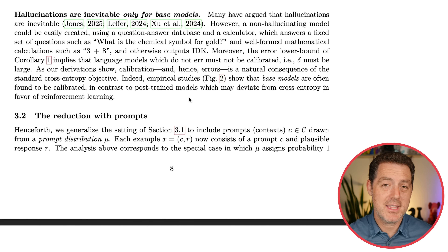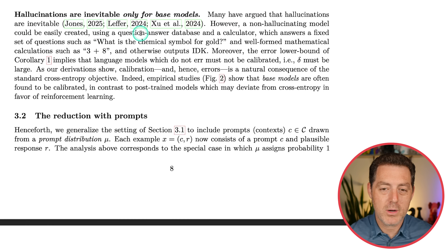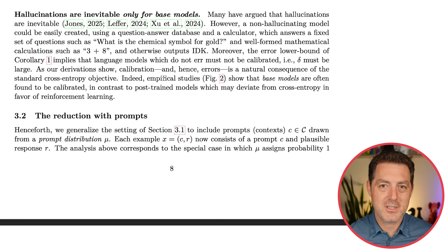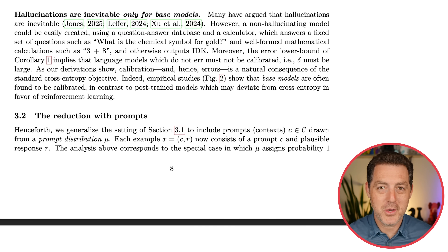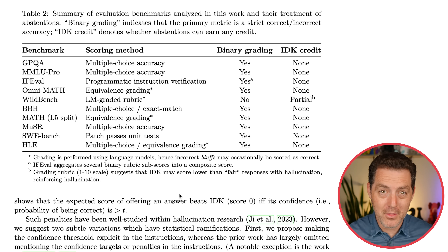An assertion in this paper is that hallucinations are inevitable only for base models. A non-hallucinating model could be created using a question-answer database and a calculator — answering a fixed set of questions like 'what is the chemical symbol for gold' or mathematical calculations like 'three plus eight,' and otherwise outputting 'I don't know.' If it knows the answer, great. If it doesn't, just say so. The simple solution is: answer only if you are above a certain confidence threshold — say 75%. Only answer if you're greater than 75% confident; otherwise say 'I don't know.'